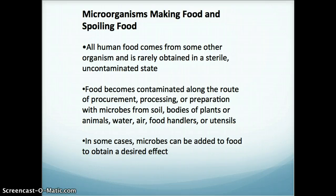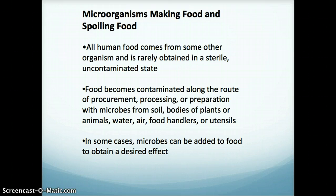Human food comes from another organism generally, and it's rarely obtained in a sterile or uncontaminated state. You can think about that either in vegetables and fruit or even in meat — it is coming from a non-sterile environment. Food can become contaminated along the route of procurement, during processing or preparation, with microbes from soil, bodies of plants or animals, even from water, air, and food handlers or utensils.